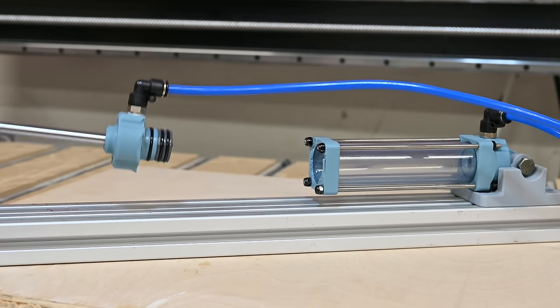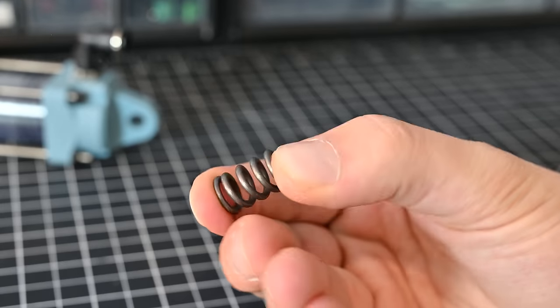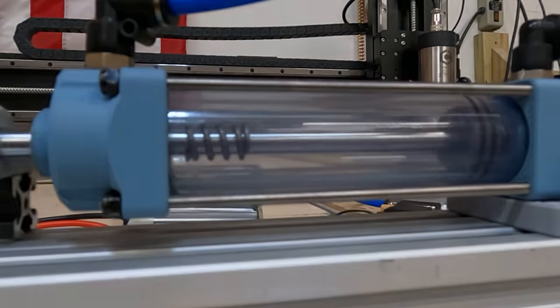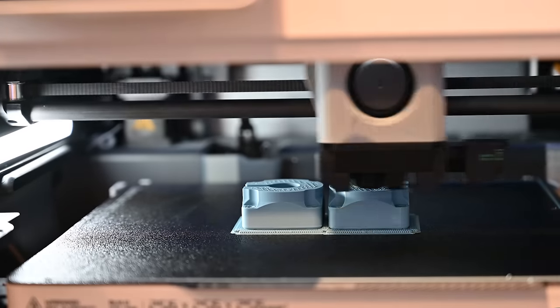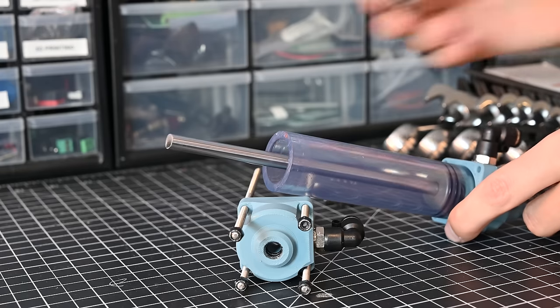Luckily there's an easy fix for this. All I need to do is add some springs. This will make the transfer of momentum a lot slower, and therefore less force will be applied. So after reprinting everything one last time, and assembling the parts with the new springs.